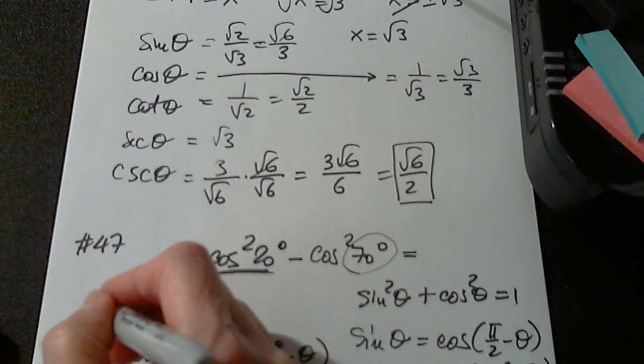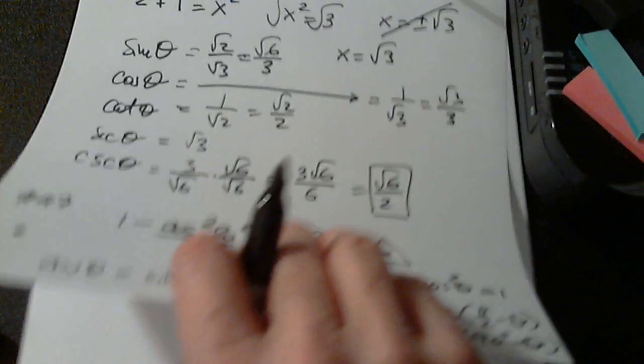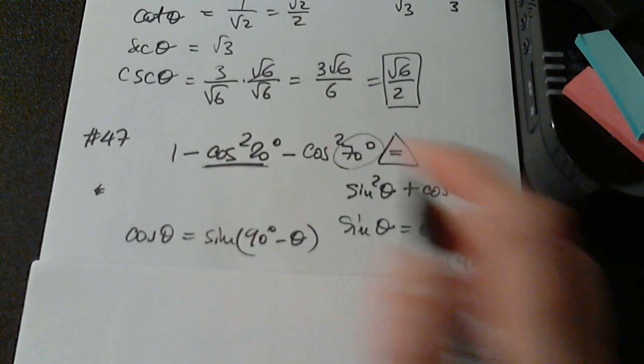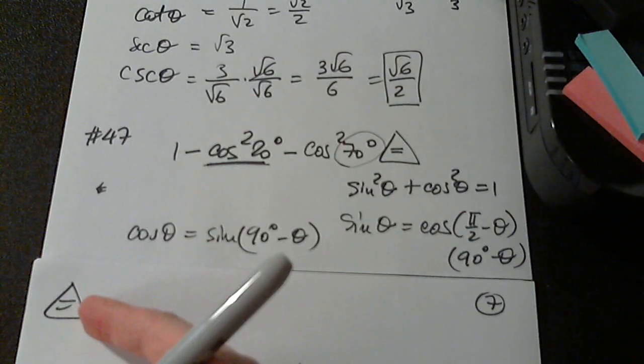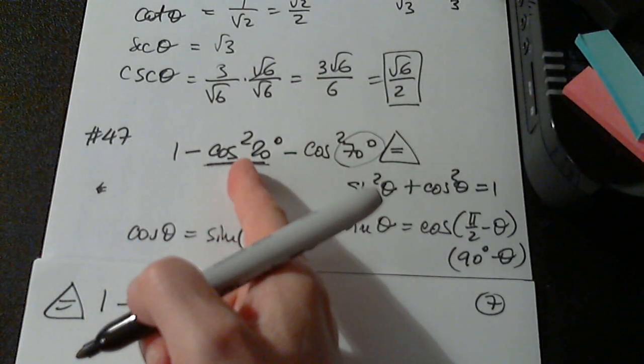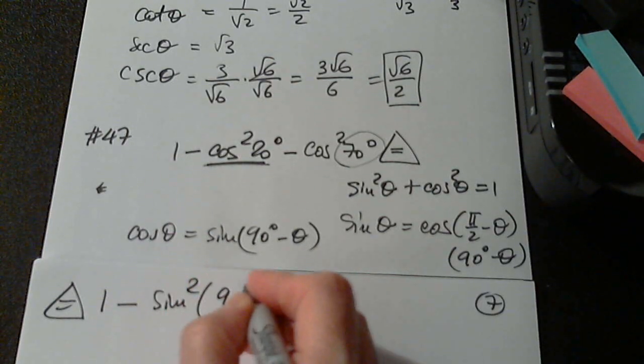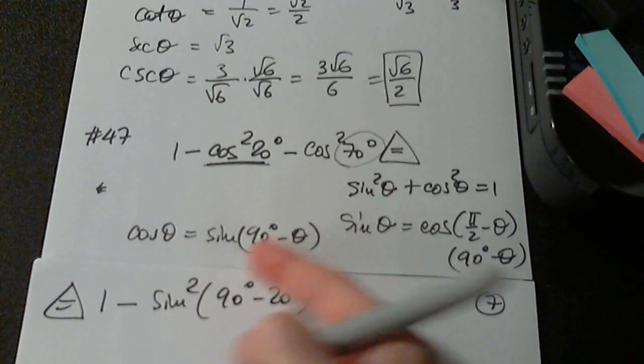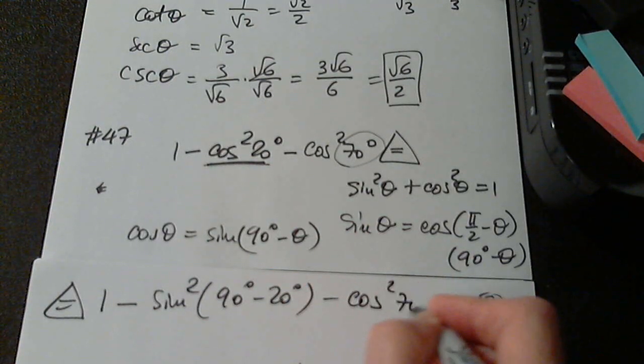So I'm not going to write here. I'm going to continue on the next page. So the triangle, follow the triangle. So I have 1 minus, instead of this, I would write sine squared of 90 degrees minus 20 degrees and minus cosine squared 70 degrees.